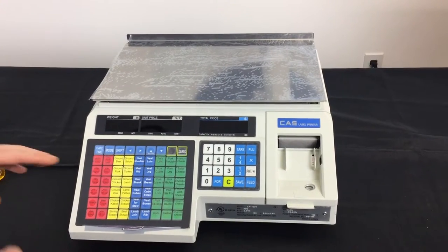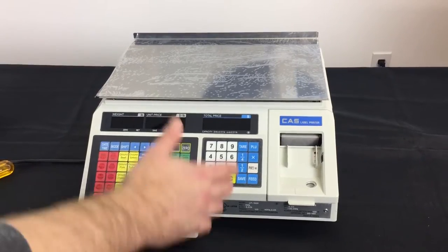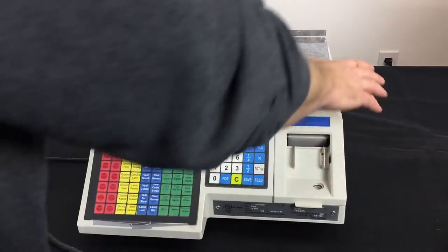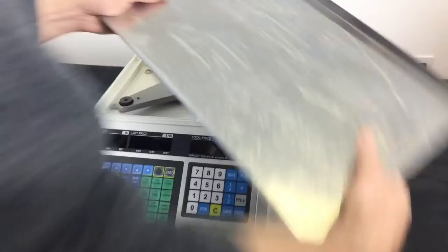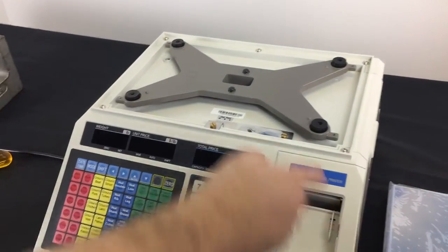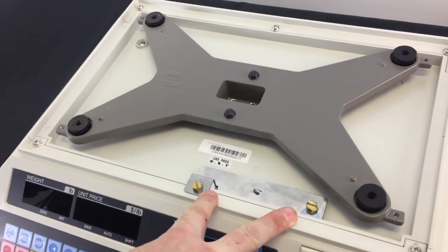This is the calibration process for the LP-1000N. In order to start the process, first thing you want to do is remove the platter from the scale to have access to your calibration plate with two sealing bolts.